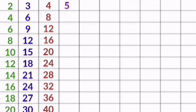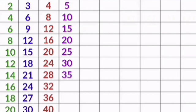5 1s are 5, 5 2s are 10, 5 3s are 15, 5 4s are 20, 5 5s are 25, 5 6s are 30, 5 7s are 35, 5 8s are 40, 5 9s are 45, 5 10s are 50.